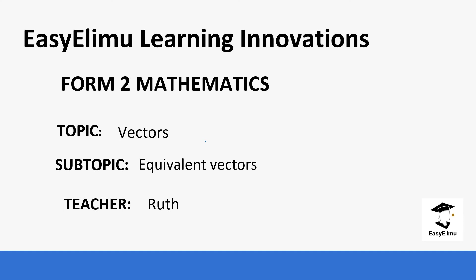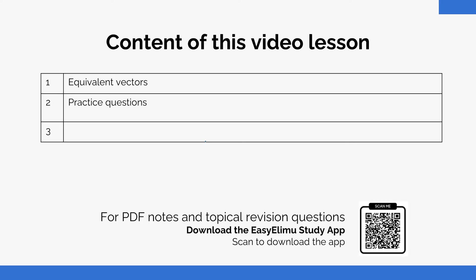We are going to be looking at equivalent vectors — basically how we represent vectors; this is the introduction to vectors. How do we represent them? What are vectors that are equivalent or equal? And what are some of the negative or opposite vectors?